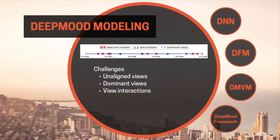The data we collected can essentially be considered as multi-view time series data, including alphanumeric characters, special characters, and accelerometer values. Basically, we use recurrent neural networks to model each view of the time series, and then we develop three different fusion strategies to combine the outputs of multiple recurrent networks.